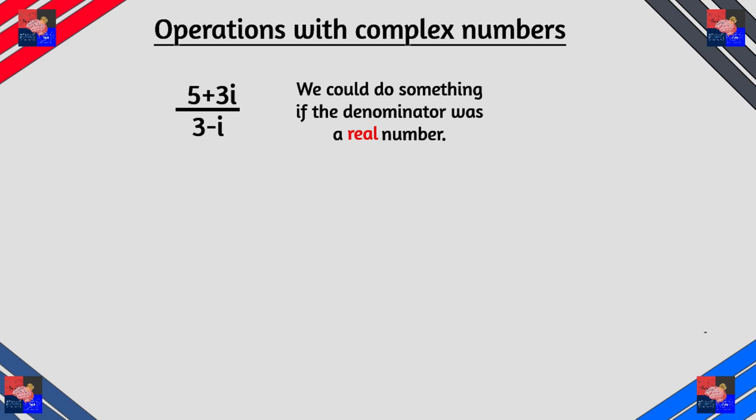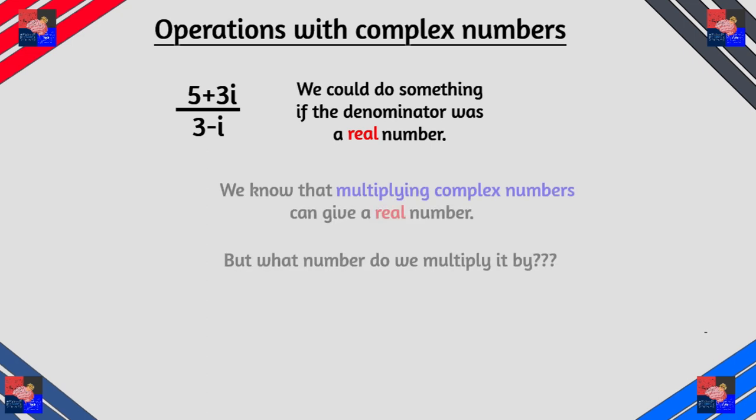Now division works a little bit like multiplication. Say we have (5+3i) over (3-i). If we had a real number in the denominator then we could do something because we really have nothing to work with here. So we can multiply this by something.